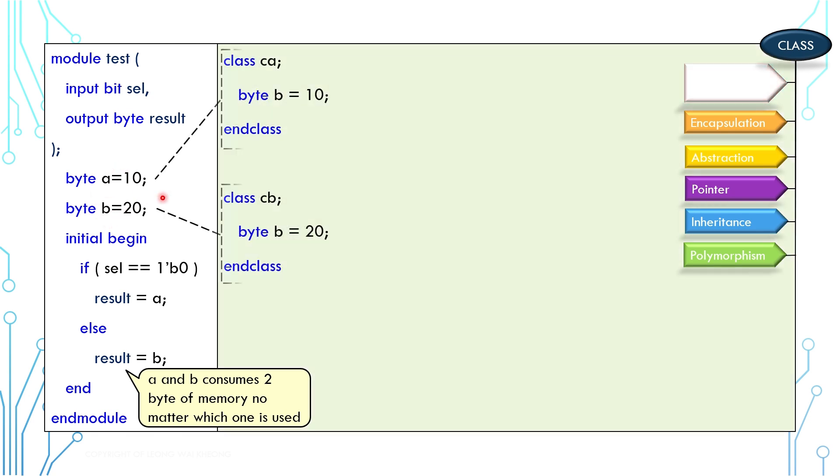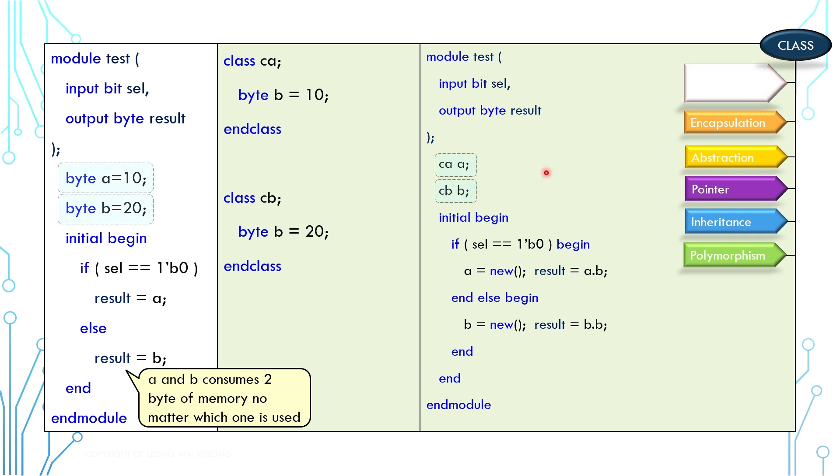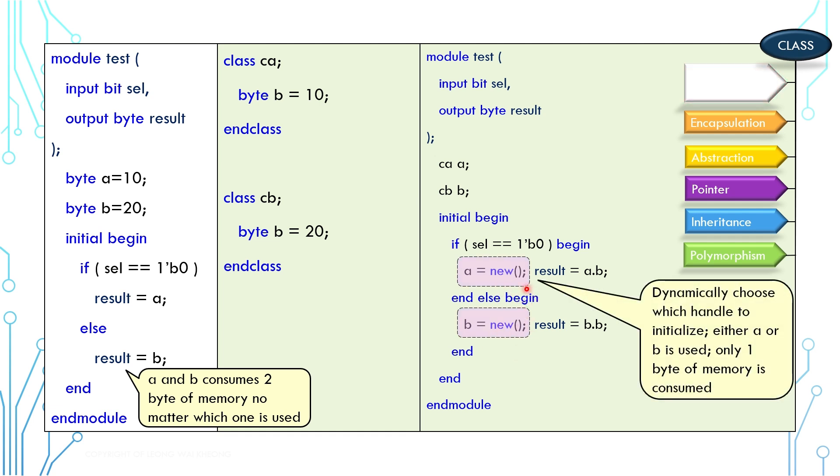Let's say we introduce two class handles to replace the bytes. The example will look like this. These are two handles instead of two bytes. We can use the constructor to instantiate the handle as needed. Only the chosen one is instantiated and therefore, very generally, only one byte of memory is in use.